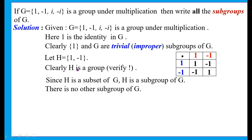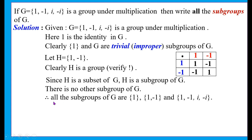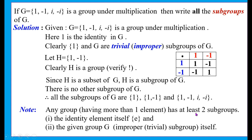Any subgroup must contain the identity element of the group, so H also contains the identity 1. Thus all subgroups of G are: {1}, {1, -1}, and G = {1, -1, i, -i}. This group has 3 subgroups; out of these, 2 are trivial and the last one H = {1, -1} is a non-trivial or proper subgroup of G. Note: any group having more than one element has at least 2 subgroups — the identity element alone, and G itself.